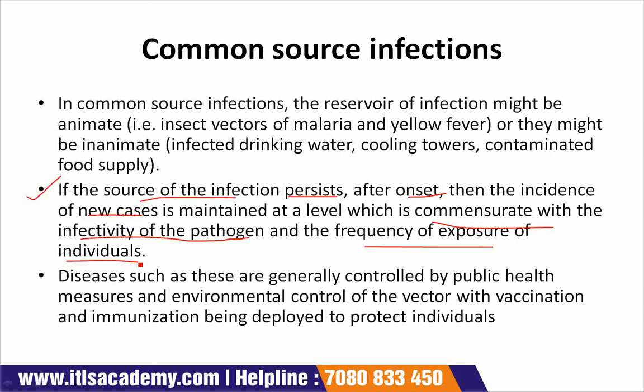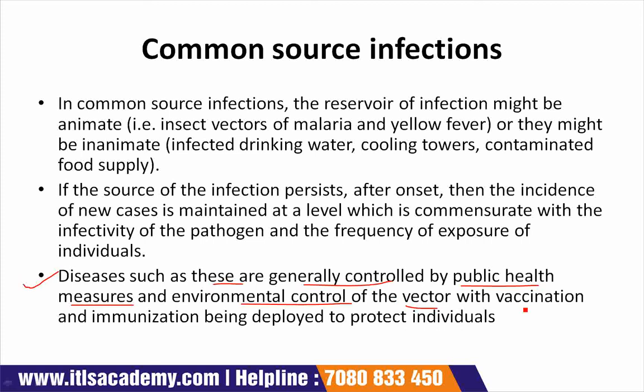For infectious diseases transmitted to humans via insect vectors, the onset and decline phases of epidemics are rarely observed other than as reflections of seasonal variations in the prevalence of the insect. Such diseases are generally controlled by public health measures and environmental control of the vector, with vaccination and immunization deployed to protect individuals.